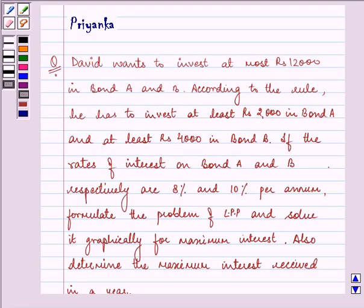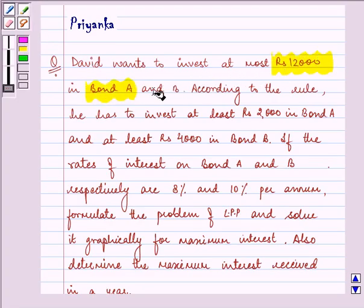Hello and welcome. The question says, David wants to invest at most rupees 12,000 in bond A and B.